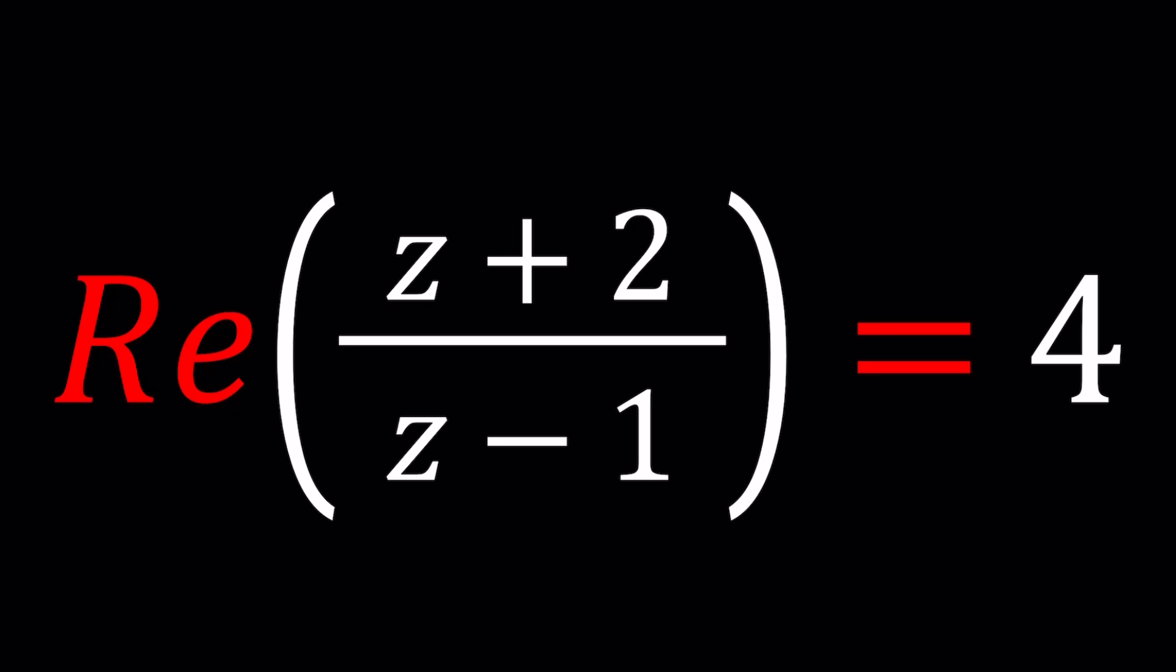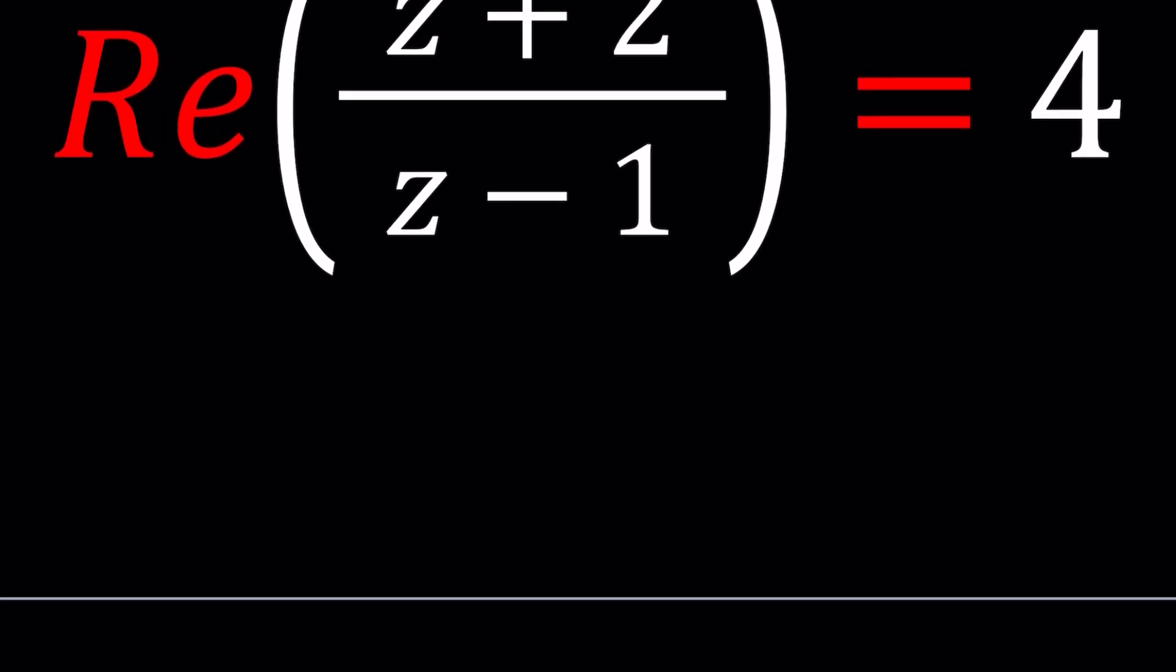Let's go ahead and take a look at this equation and notice that z cannot equal 1 because then that's going to give you an undefined expression. So you don't want z to be 1, just pay attention to that because you'll see in a little bit.